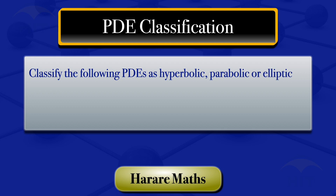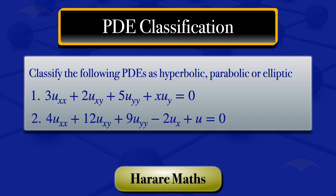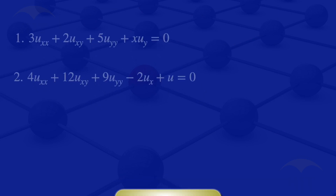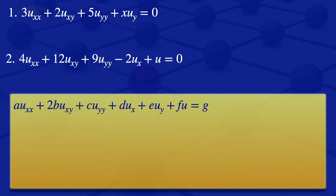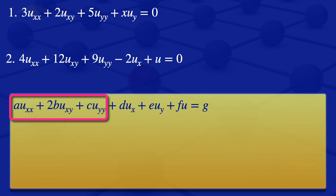In this video, I'm going to classify PDEs as hyperbolic, parabolic, or elliptic. I'll be looking at two second-order partial differential equations. To classify them, I'll start by looking at the general form of a second-order PDE, which is a multiplied by the second derivative of u with respect to x, plus 2b multiplied by the mixed partial derivative, plus c multiplied by the second partial derivative with respect to y. We focus on the principal part and its coefficients a, b, and c.